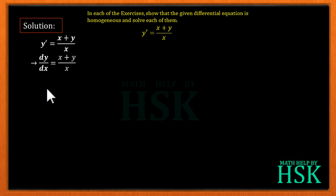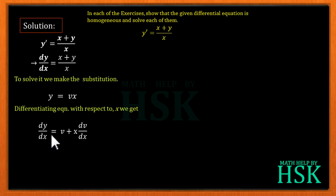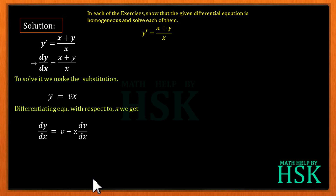For the solution, we make the substitution y = vx. Differentiating both sides with respect to x, we get dy/dx = v + x·dv/dx. We substitute dy/dx = v + x·dv/dx and y = vx into the equation, giving us an expression after making the substitution.